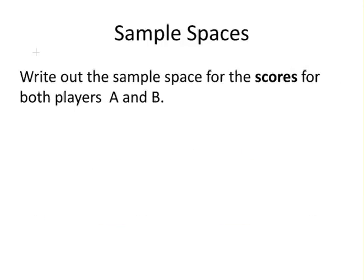Write out the sample space for the scores of both A and B. In this case, it's the scores we're interested in. The scores for A are zero, one, two, or three heads.